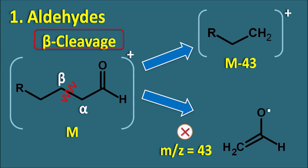Aldehydes can also show McLafferty rearrangement when having a gamma hydrogen. McLafferty rearrangement gives a peak at m/z 44. We have discussed McLafferty rearrangement in a previous video. So aldehydes give a McLafferty rearrangement peak at m/z 44.